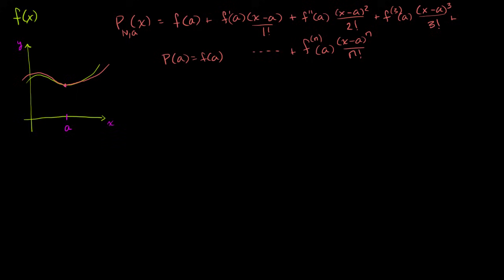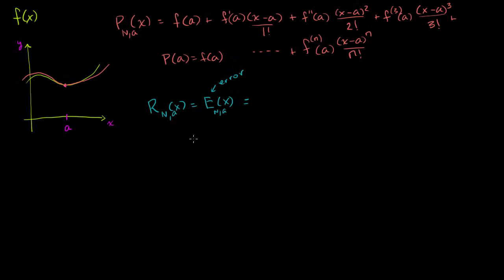So what I want to do is define a remainder function — or sometimes textbooks call it an error function. Some people will call this a remainder function for an nth degree polynomial centered at a. The error function is sometimes avoided because it looks like expected value from probability. And what we'll do is define this function to be the difference between f of x and our approximation p of x for any given x — so it's f of x minus p of x, where p is an nth degree polynomial centered at a.